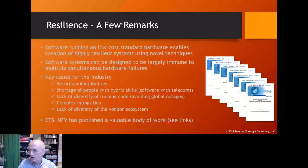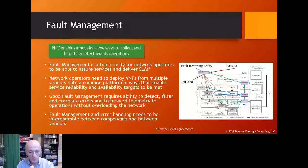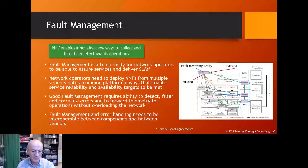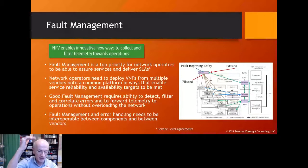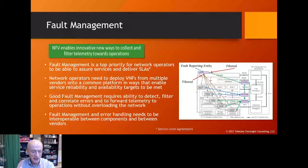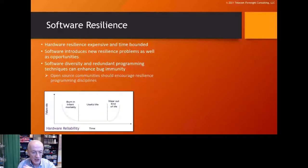Fault management is really important for network operators — probably number one after security. We need to deploy virtual network functions from different vendors onto a common platform and assure them. Good fault management requires the ability to detect, filter, and correlate faults, and we must not overload the infrastructure with fault management telemetry. There is interesting work going on using NFV to assure networks with novel analysis techniques.